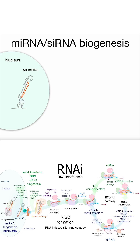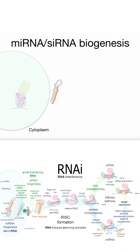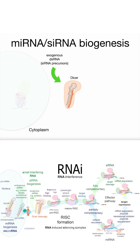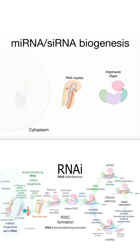In the case of the microRNAs, they get made as long hairpins called primary microRNAs, pri-miRNAs, that then get chopped by a microprocessor complex into shorter hairpins called pre-microRNAs that get transported into the cytoplasm and cleaved by a protein called Dicer. You can also have long RNA duplexes come in here to serve as siRNA precursors. Dicer is then going to cleave them into an RNA duplex, and then this is going to get loaded into Argonaute.